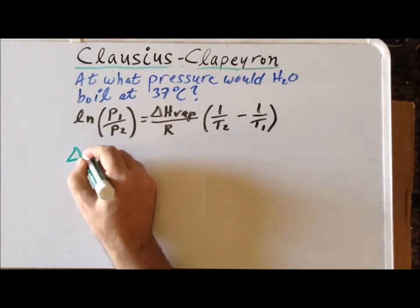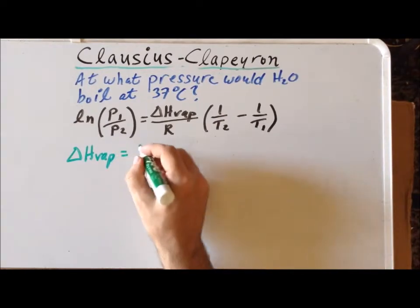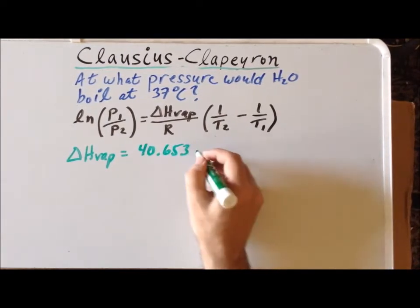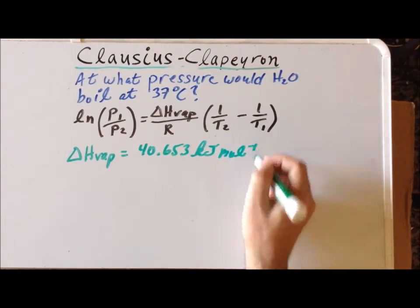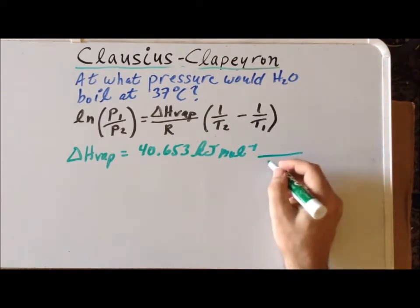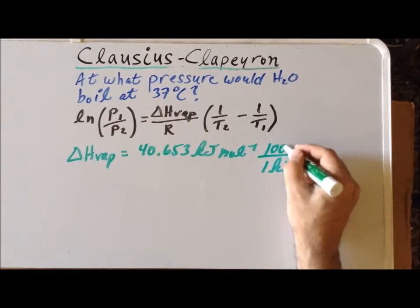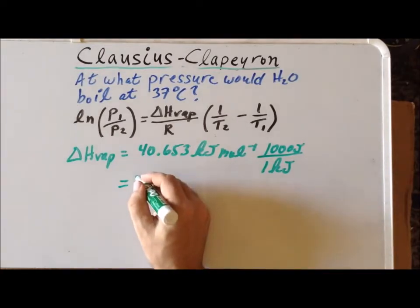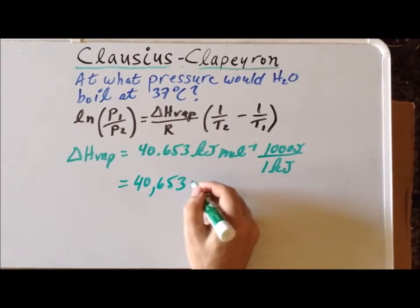Recall that the enthalpy of vaporization of water is 40.653 kilojoules per mole. We often convert this immediately to joules. We know that 1 kilojoule is equal to 1,000 joules. This gives us the enthalpy of vaporization of water as 40,653 joules per mole.